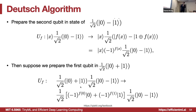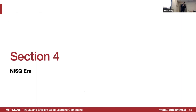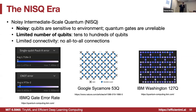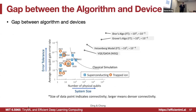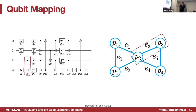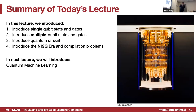The last section concerns the NISQ (noisy intermediate-scale quantum) era. Current devices are very noisy and not large enough, so we must develop algorithms and compilation methodologies to improve the power of current devices. As a recap, today we introduced single qubit states and gates, multi-qubit states and gates, combined them as quantum circuits, and discussed how to run and compile quantum circuits on current devices. The next lecture will introduce quantum machine learning. Thank you very much for listening.